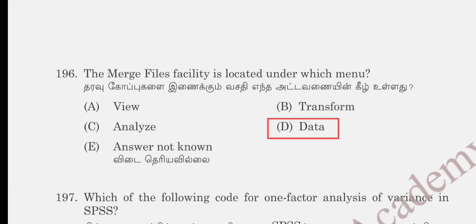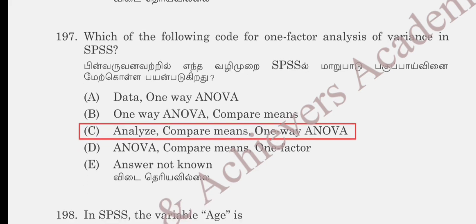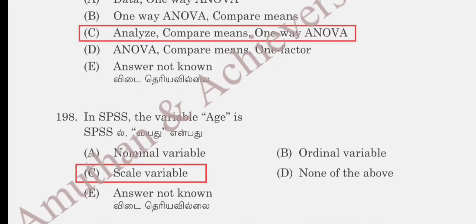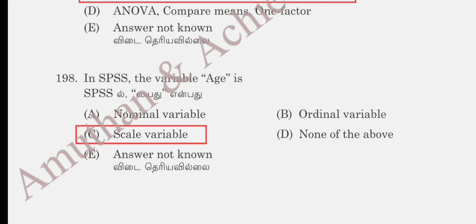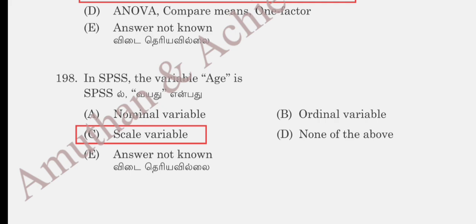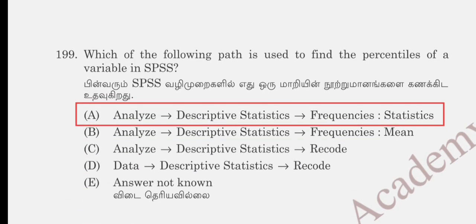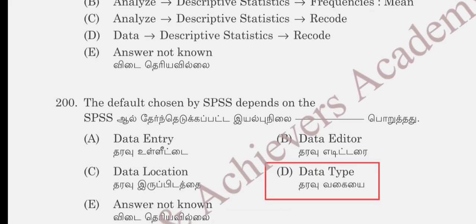Question 196: the merge files facility is located under which menu in SPSS? View, transform, analyze, or data. Option C, data, is correct. Question 197: which path performs one-factor analysis of variance in SPSS? Analyze > Compare Means > One-Way ANOVA is correct. Question 198: in SPSS, the variable age is a: nominal scale, ordinal scale, scale variable, or ANOVA. Option C, scale variable, is correct. Question 199: to find the percentile of a variable in SPSS: Analyze > Descriptive Statistics > Frequencies > Statistics is correct. Question 200: the default chosen by SPSS depends on the data type, which is correct.